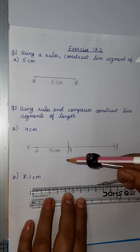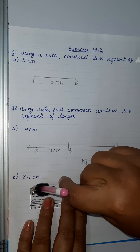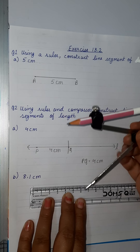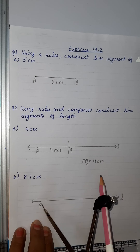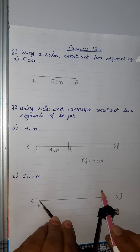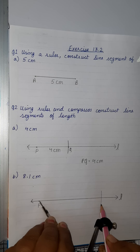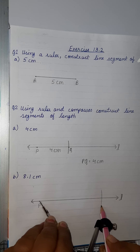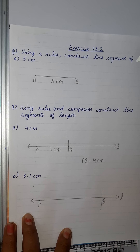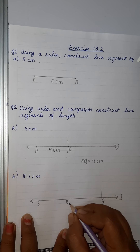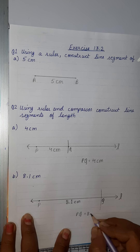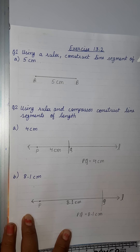Measure 8.1 centimeters with the compass on the ruler, taking it from 0. Place the compass at point P and cut an arc of 8.1 centimeters on the line. Name this point Q. This gives us line segment PQ of length 8.1 centimeters, constructed using compasses.